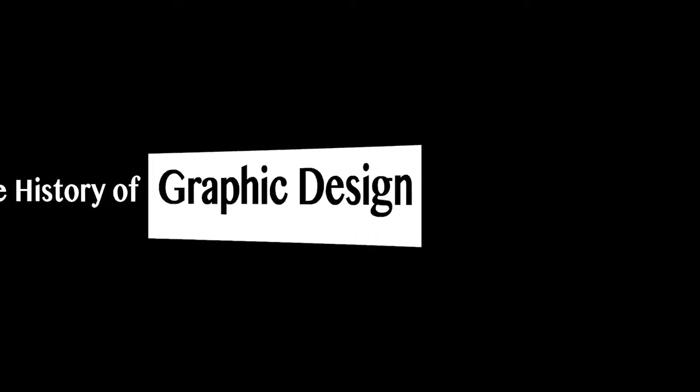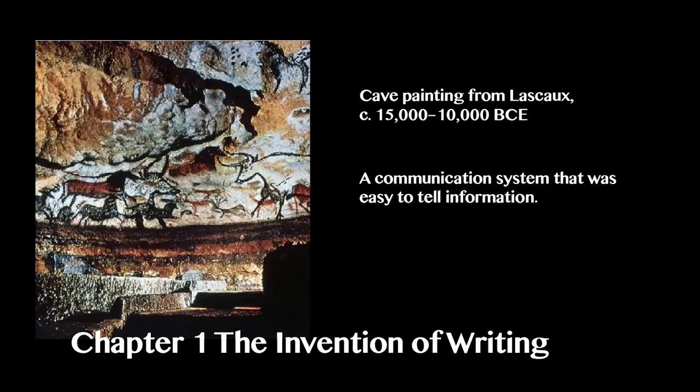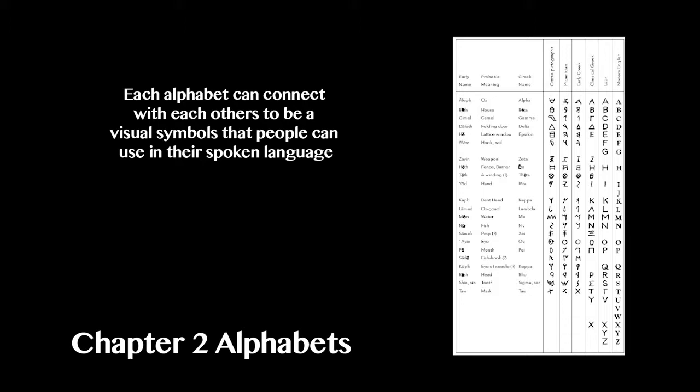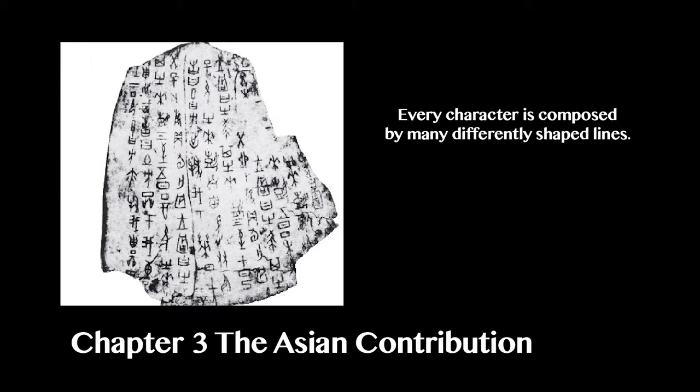This is the history of graphic design. One of the significant advances in human civilization is the invention of writing. An alphabet is a set of visual symbols to represent spoken language. The Asians' influence was Chinese calligraphy. They also invented paper and the discovery of printing.